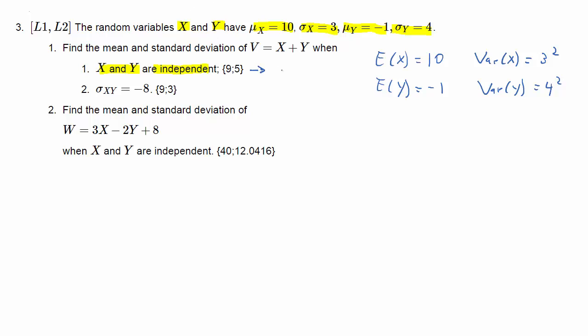The first question further assumes that X and Y are independent. That means that the covariance between X and Y is 0. In the second part, that will take a different value, and we have a negative covariance. We should calculate the mean and standard deviation of a new random variable V, which is just the sum of X and Y.